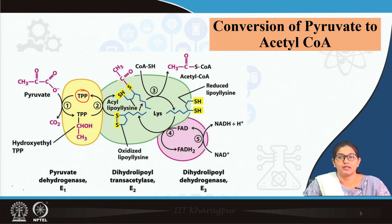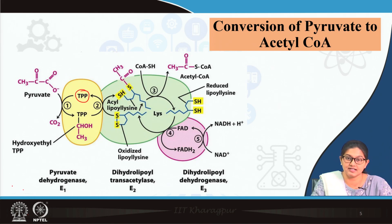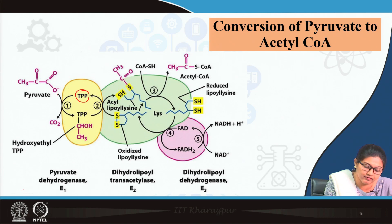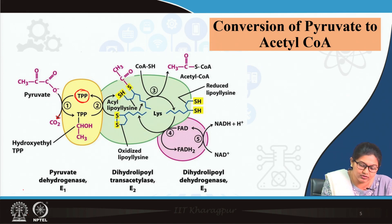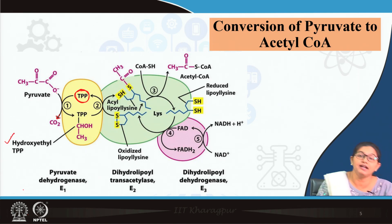How does the conversion of pyruvate happen with the help of pyruvate dehydrogenase complex? There are sequential enzyme reactions by which pyruvate is converted to acetyl coenzyme A. In the first step, pyruvate releases carbon dioxide, and the acetyl group is attached to the TPP molecule. After taking up the acetyl group, TPP is converted to hydroxyethyl-TPP.